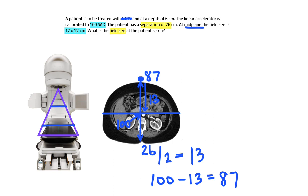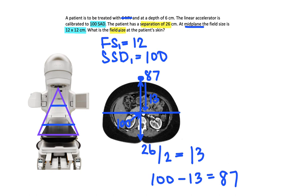So let's recap. We know our field size at this point, which is 100 SAD, is 12 by 12. So field size 1 is 12. This is a square, so we only have to use one of the field edges. If it was a rectangle, we would need to use both separately. SSD 1 is 100. We're looking for the field size, so field size 2 is X. SSD 2 we just solved for, and that is 87.